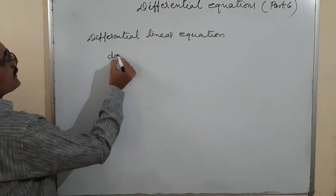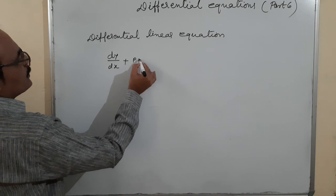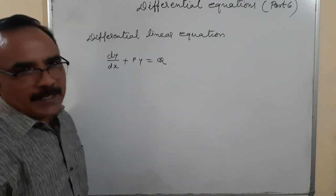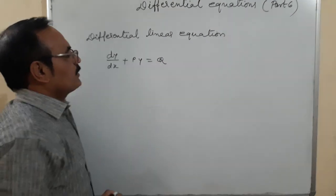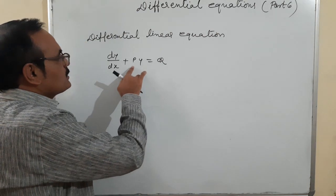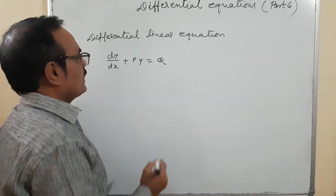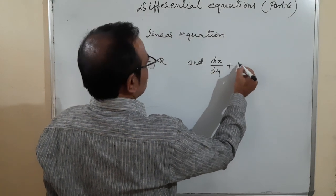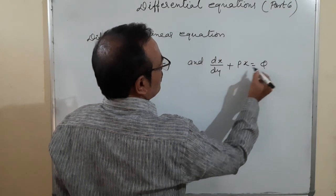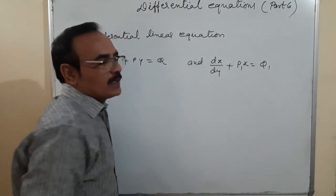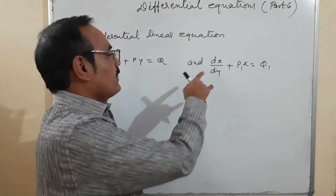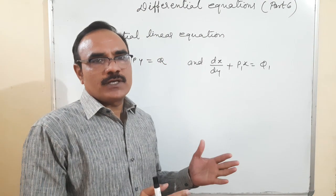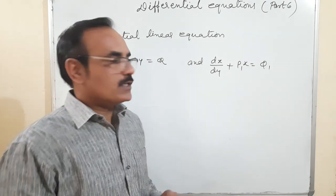One is dy/dx + Py = Q, where P contains terms with x only, no y, and Q is purely in x. The second is dx/dy + Px = Q, where P1 and Q1 contain only y, there is no x. So there are two linear differential equations. We have to arrange the question in the format which is suitable and convenient for solving it.